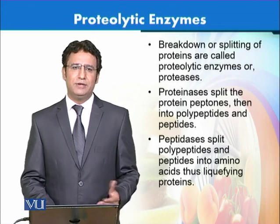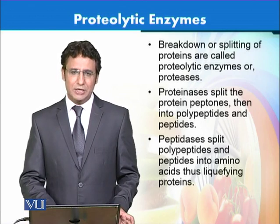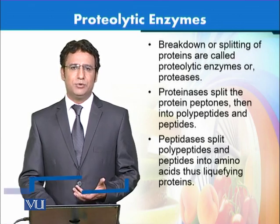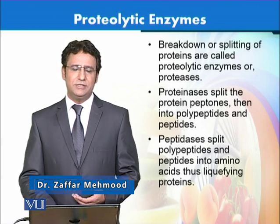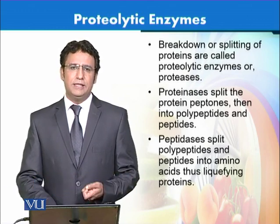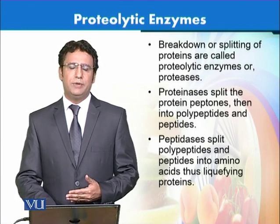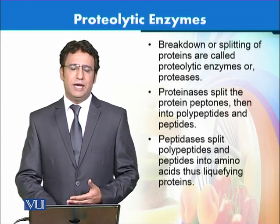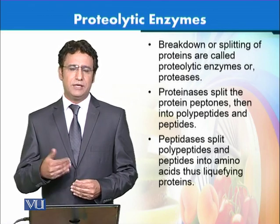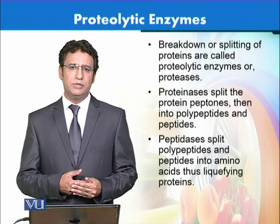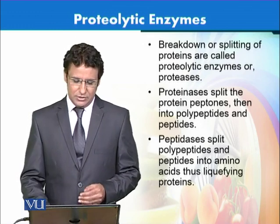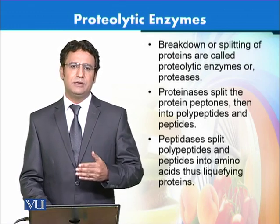Proteases can be further divided into two classes: proteinases and peptidases. Proteinases break down complex protein molecules into smaller chains — peptones, peptides, polypeptides, or simpler peptides. These peptides are then acted upon by other enzymes called peptidases, which break down the peptide chains into smaller amino acids. So proteinases act first, then peptidases act second, converting complex proteins into simpler amino acids.